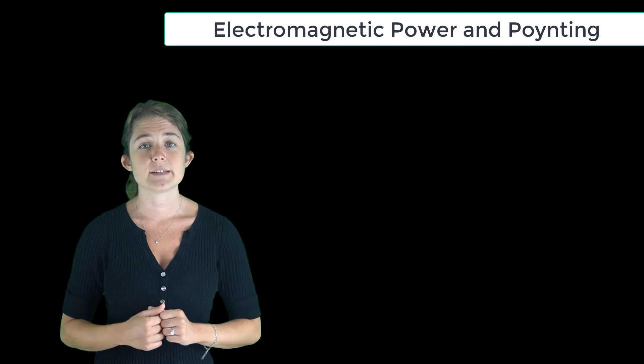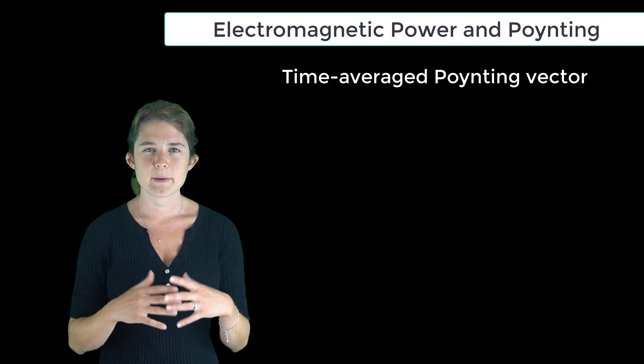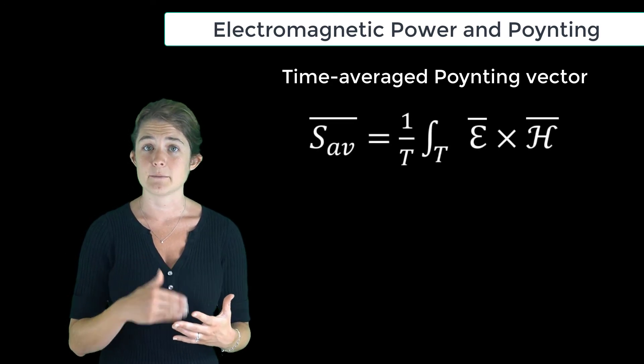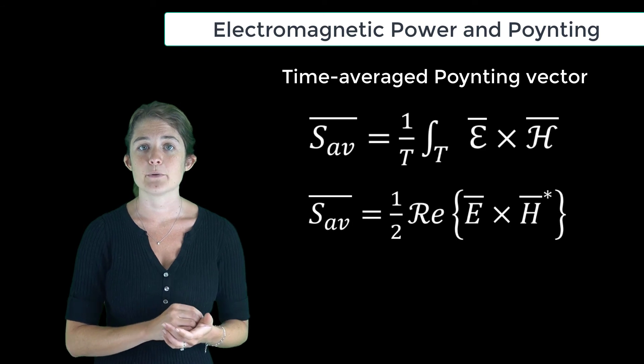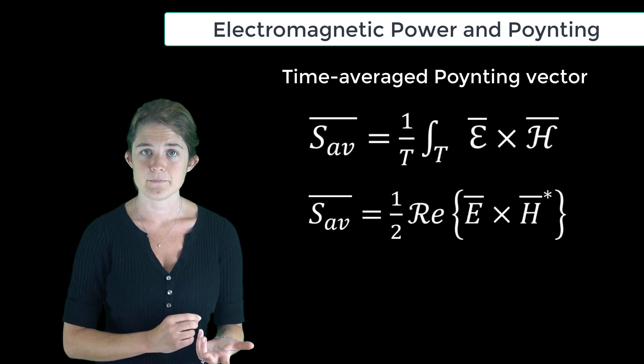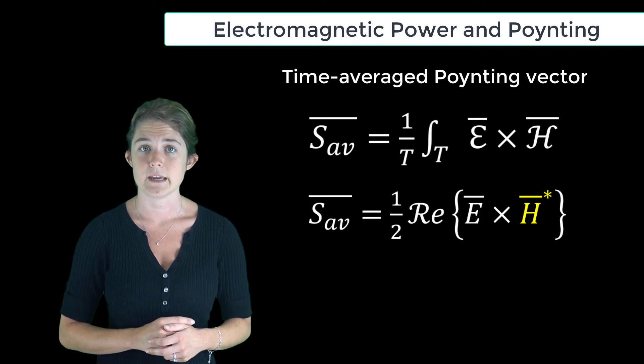We can also find the time-average power flow density or time-average Poynting vector, either by integrating over a period and dividing by that period, or by using this equation where E and H are both expressed in their phasor form. Note that this is H conjugate, the complex conjugate of the phasor field H.